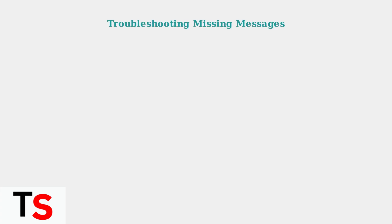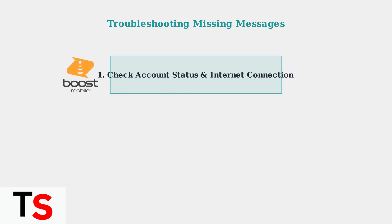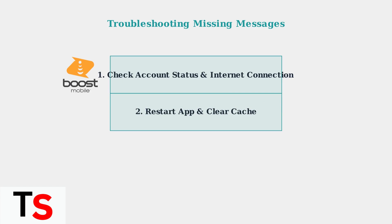When your Boost Mobile text history isn't showing correctly, there are several troubleshooting steps you can take to resolve the issue. First, ensure your Boost Mobile account is active and in good standing. Then check that you have a stable internet connection, either through Wi-Fi or mobile data. Next, restart the Boost Mobile app or refresh the website. You can also try clearing the app's cache or reinstalling it completely.